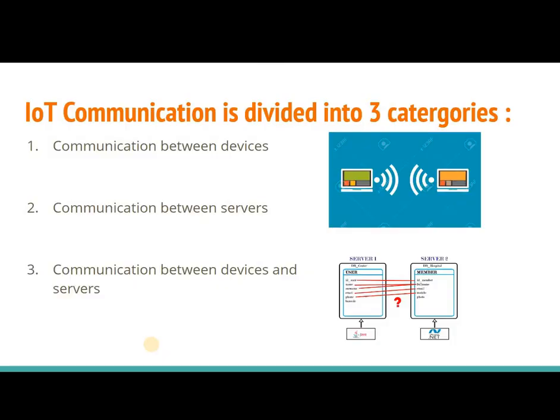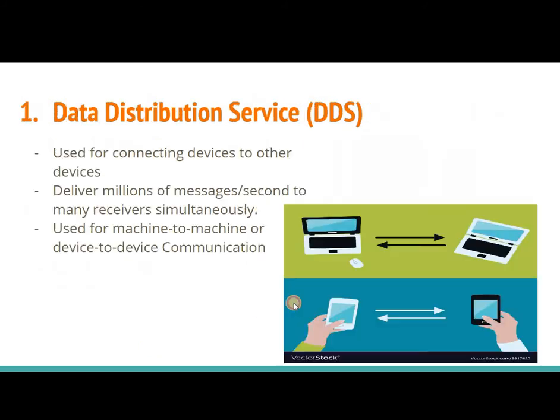If I am talking about IoT, what kind of protocols can we see in IoT? IoT communication basically works on three types of protocols. First is communication between devices. Second is communication between servers. And third is communication between devices and servers. Let's discuss them one by one and understand how each works.